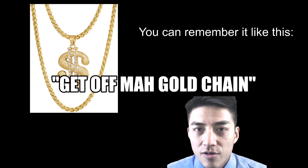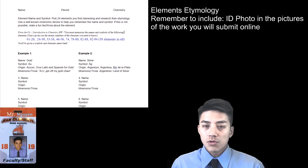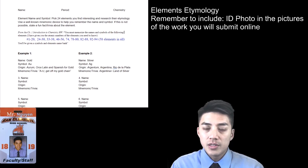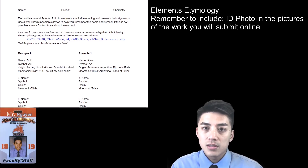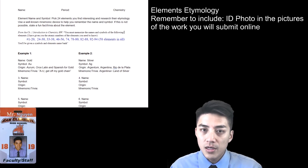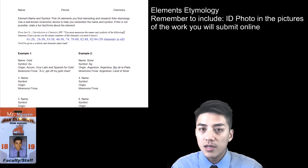Au — get off my gold chain. Thanks for watching my lesson on elements etymology. I've given you a breakdown on some of the more common elements concerning their names, symbols, histories, origins, and folklore. Now it's up to you to fill in the rest of the notes and have this submitted alongside an ID photo somewhere in the picture of the work you'll submit online. Thanks for watching, and I'll see you next time on Wind Chemistry.